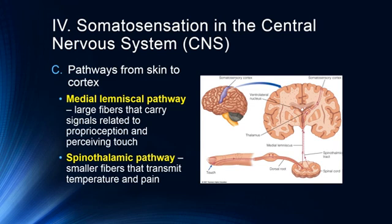The medial-lemniscal pathway interacts more directly with the motor cortex. The spinothalamic pathway transmits temperature and pain, and is also involved in the reflex arc. When you experience sudden pain — like being jabbed with a pin or touching something hot — the spinothalamic pathway transmits that perception to the brain, but these fibers also arc across an interneuron to the motor neuron, causing you to jerk your hand away. The brain is not involved in that reflex arc — it's the smaller fibers transmitting temperature and pain that drive that response.